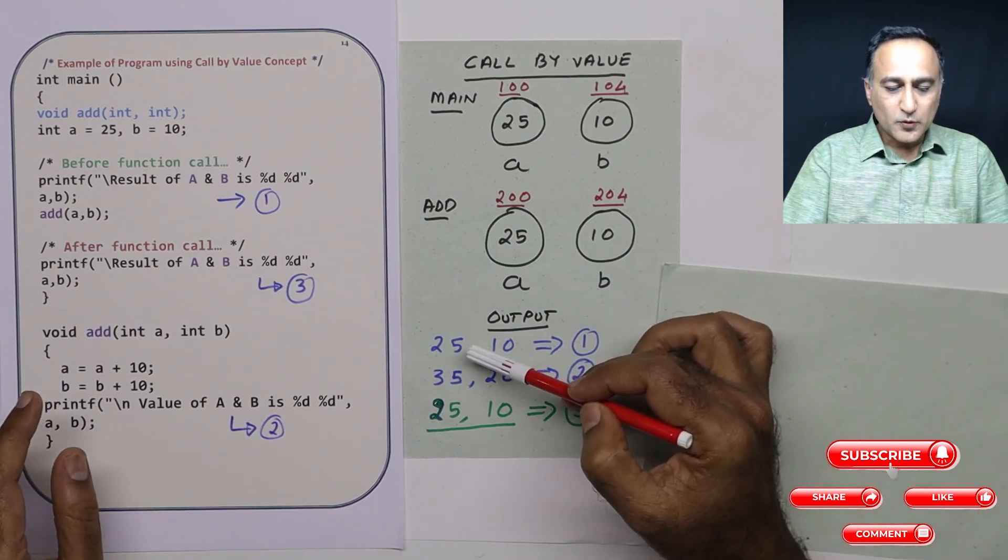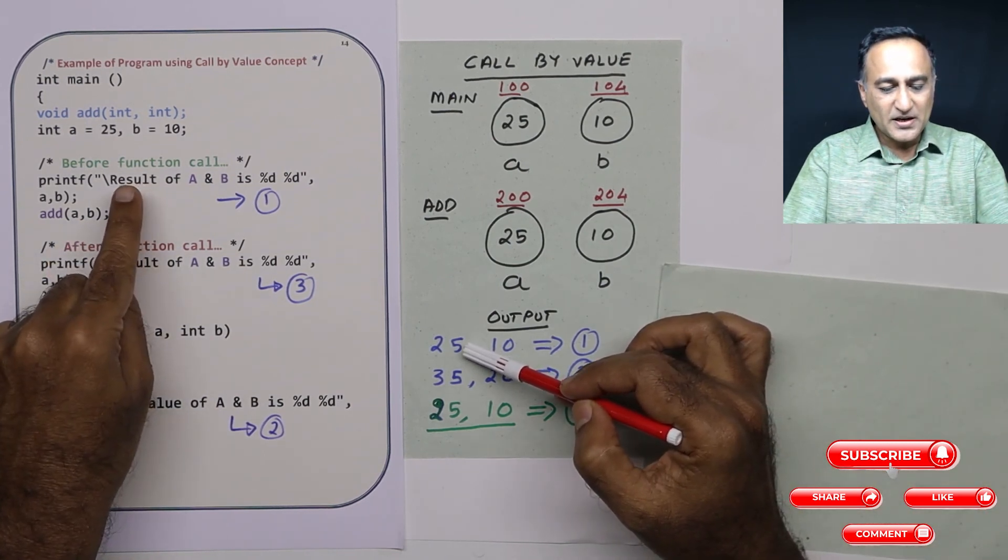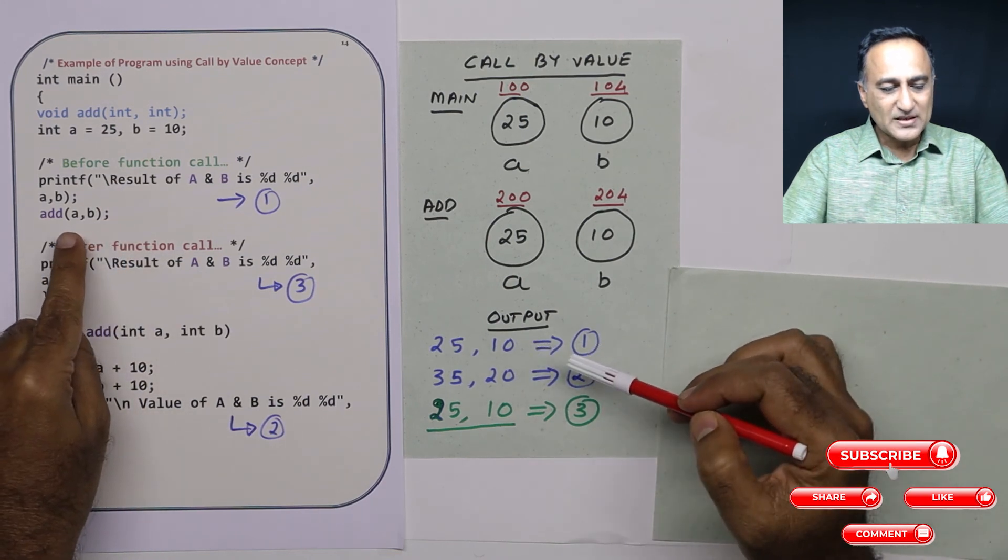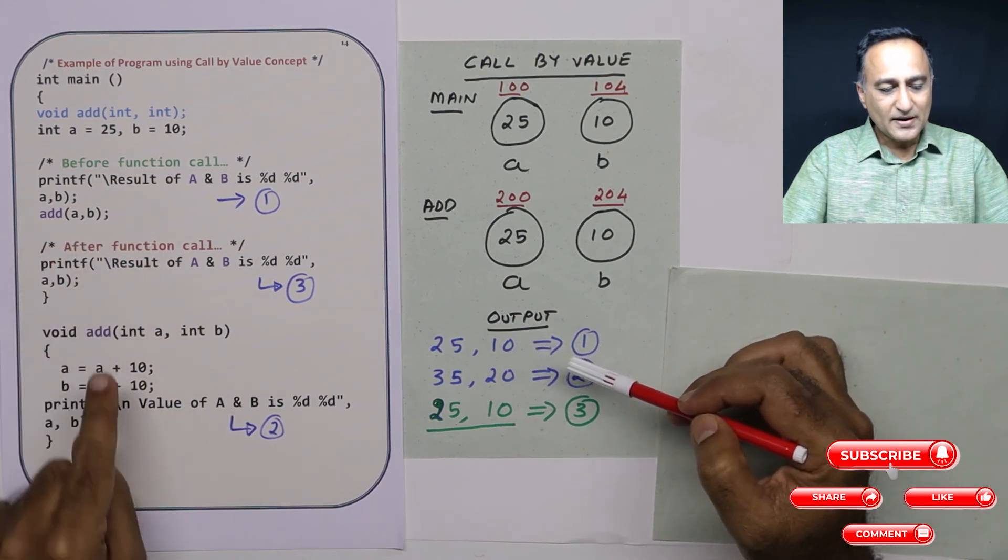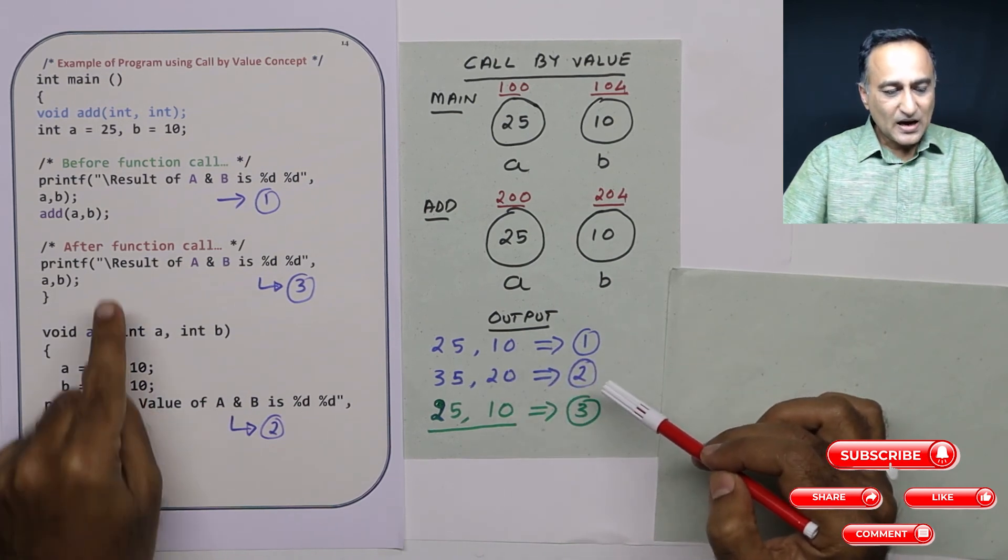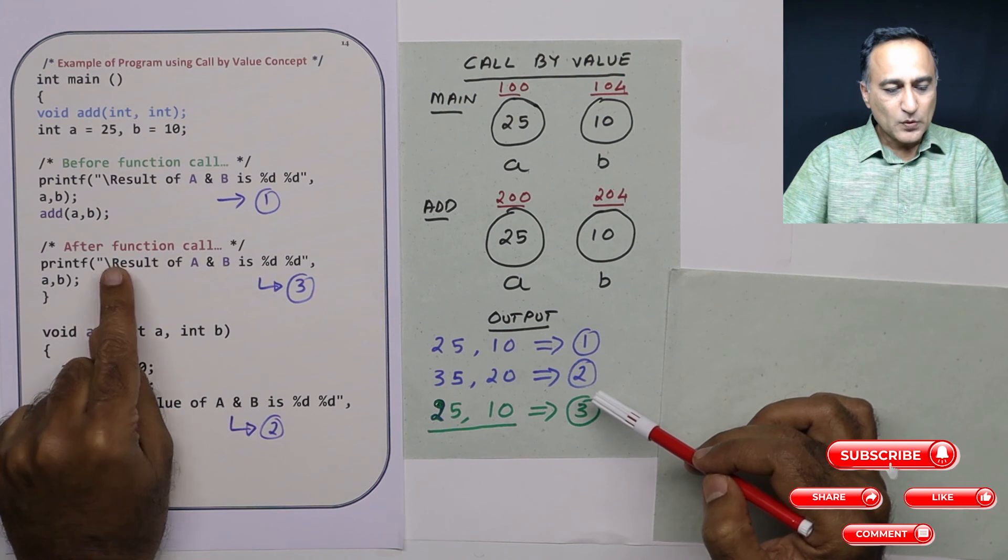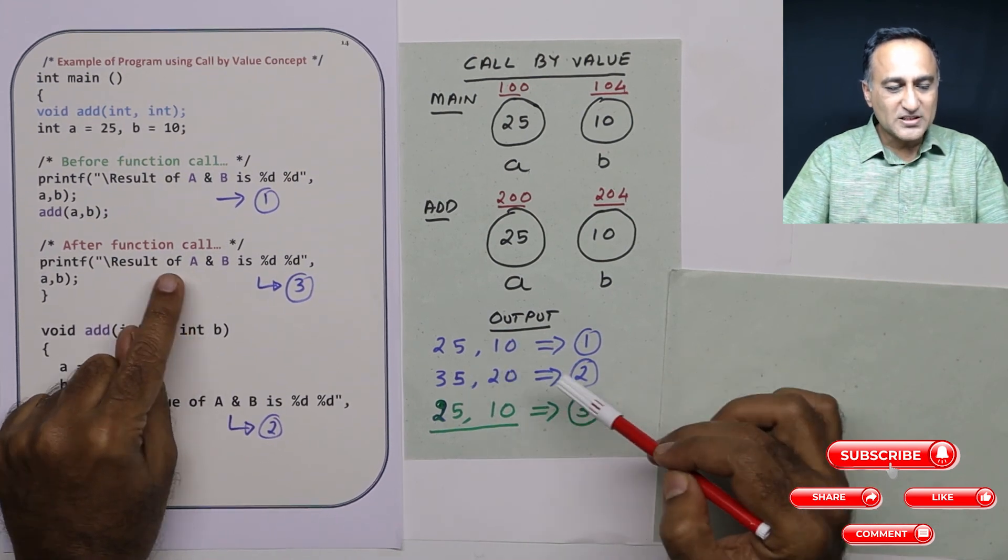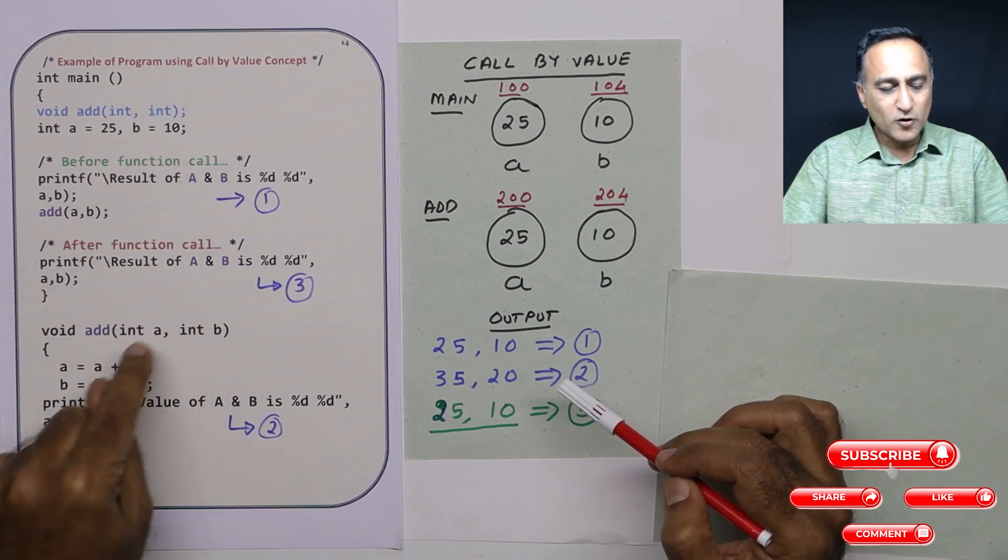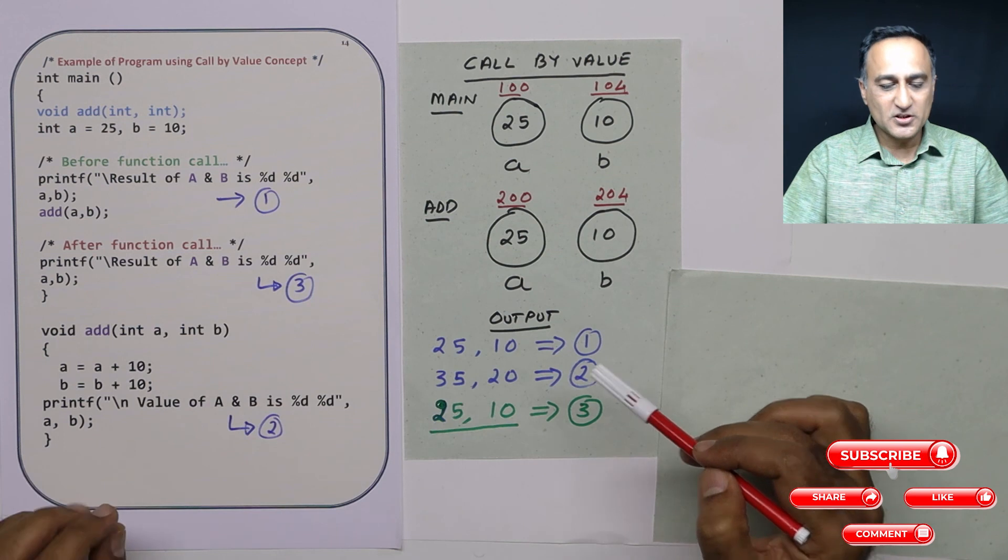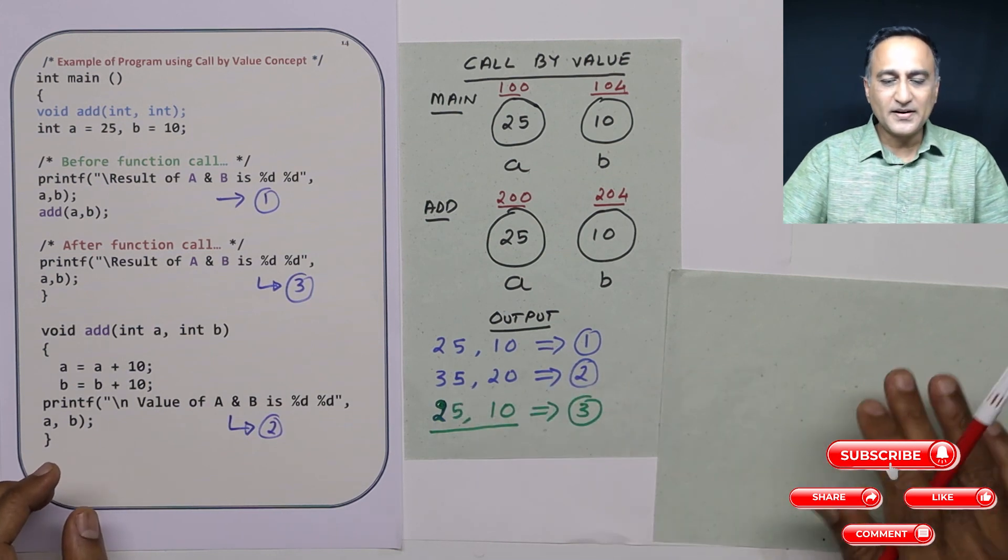So my explanation should prove this output. First time I print a, b: 25, 10. Second time when I pass a, b to add and print a, b, it's printing 35 and 20. Then after the function call, when I'm printing a and b, it's not printing 35 and 20 because the original values have not been changed here—these are two different memory locations. So it still prints 25 and 10.